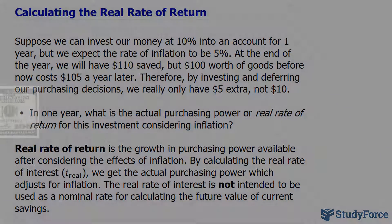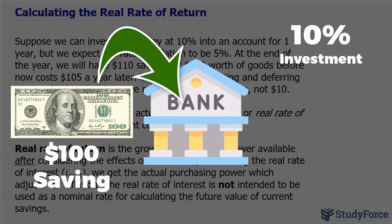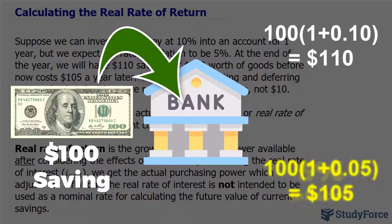Suppose we can invest our money at 10% into an account for one year, but we expect the rate of inflation to be 5%. At the end of the year, we'll have $110 saved up as a result of our investment. But $100 worth of goods before now costs $105 a year later.